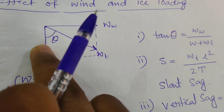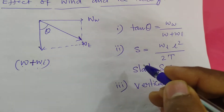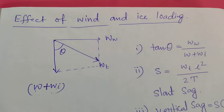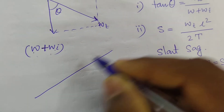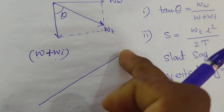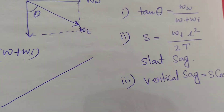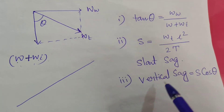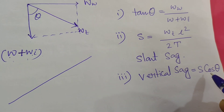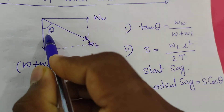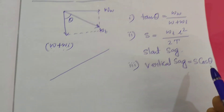The angle theta is given by: tan theta equal to WW by (WC plus WI). This gives the slant SAG — the SAG along the inclined direction. Slanting means the line is inclined, not horizontal. We can calculate the slant SAG using this formula. For the vertical SAG, if we know the slant SAG and the angle theta, then vertical SAG is calculated by multiplying the slant SAG by cos theta.